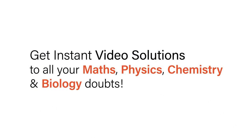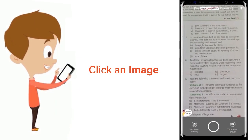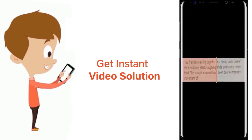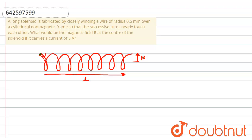With Doubtnet, get instant video solutions to all your maths, physics, chemistry and biology doubts. Just click the image of the question, crop the question and get instant video solution. Download Doubtnet app today. A long solenoid is fabricated by closely winding a wire of radius 0.5 mm over a cylindrical non-magnetic frame.